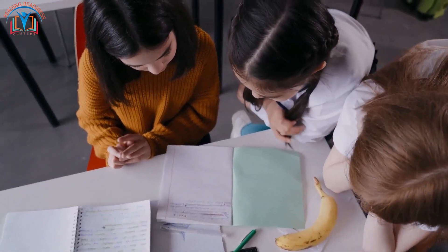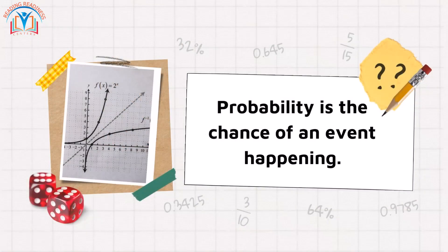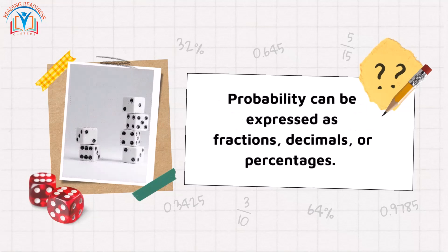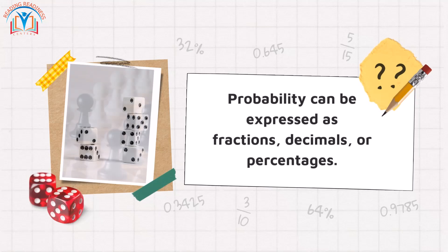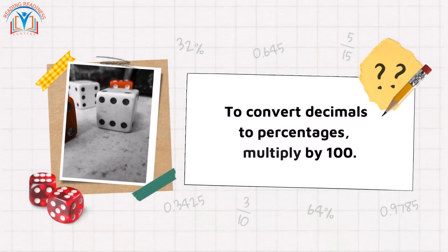Probability helps us make informed decisions in everyday life. Probability is the chance of an event happening. Probability can be expressed as fractions, decimals, or percentages. To convert fractions to decimals, divide the numerator by the denominator. To convert decimals to percentages, multiply by 100.